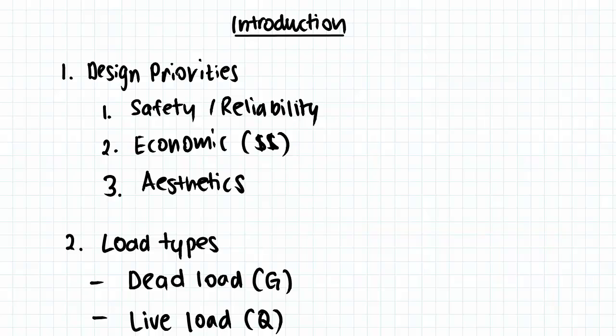Thirdly, aesthetics — we want buildings that look good, and to achieve that we might choose certain steel members with different thicknesses or certain types of steel. Steel Structures One as a course will focus mainly on the first priority, safety and reliability, looking at the capacity of different columns and members to ensure they have enough capacity to support a design load.